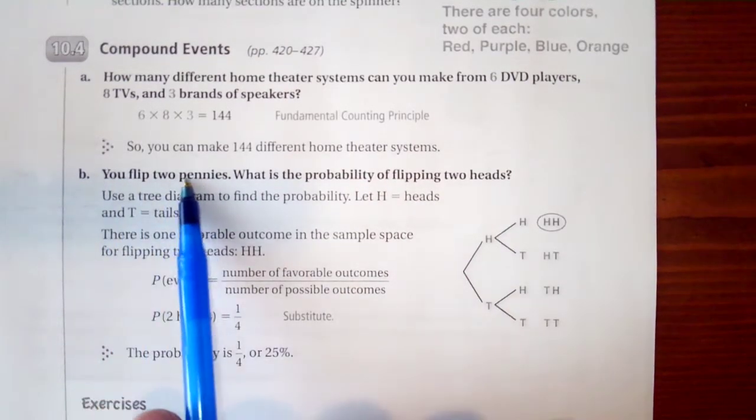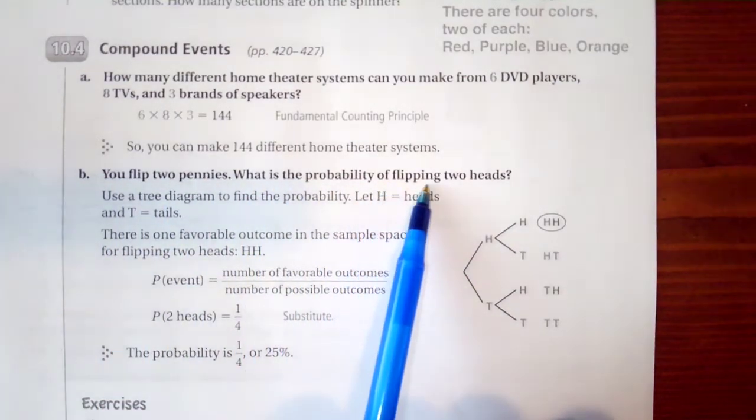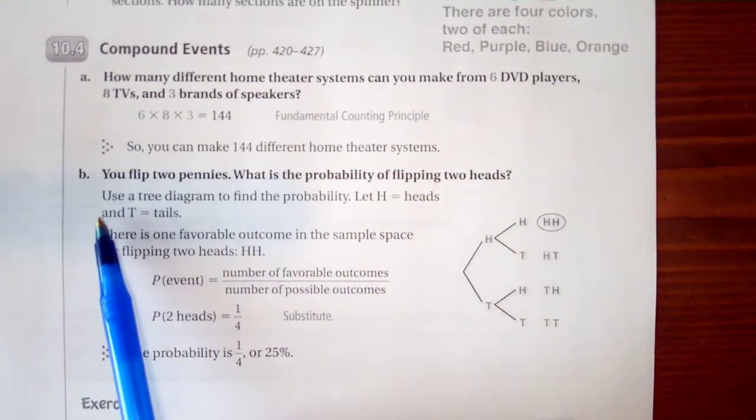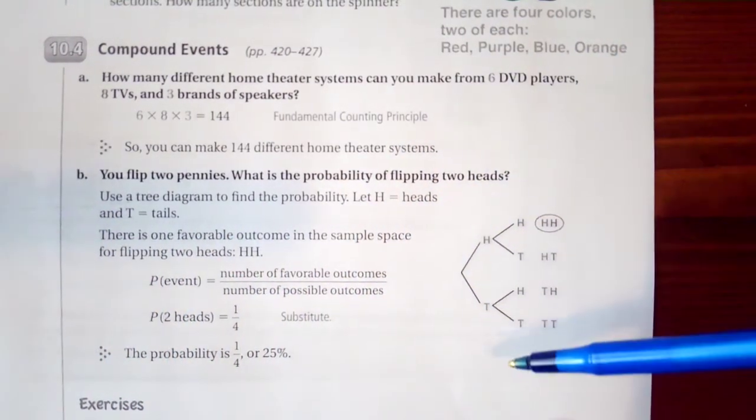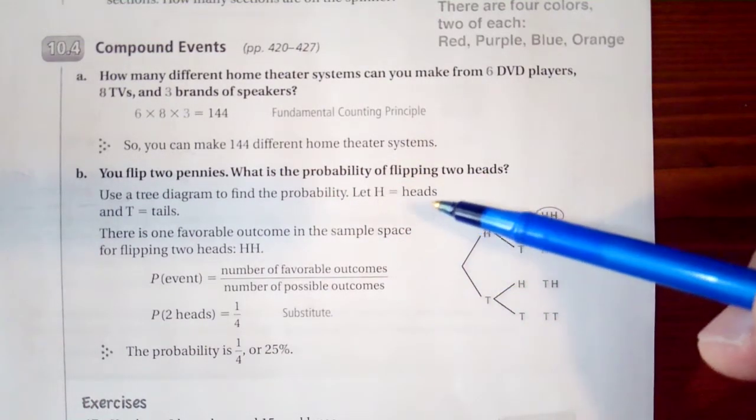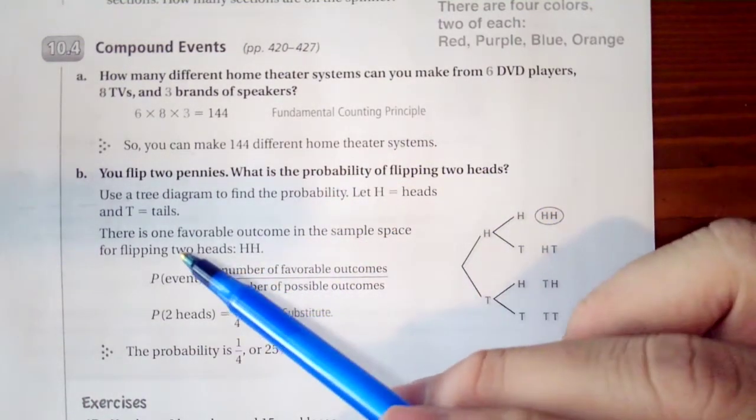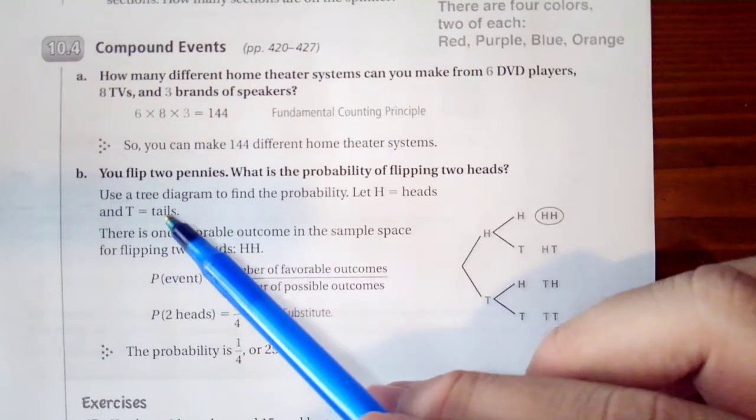Then B, you flip 2 pennies. What is the probability of flipping 2 heads? We use a tree diagram here. We're letting H be heads and T be tails.